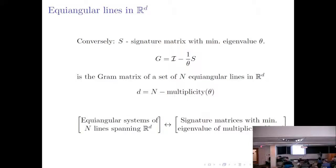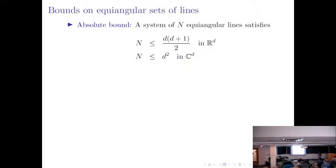So if we are trying to study systems of equiangular lines, we reduce that to the study of these matrices, and most of the results can be obtained from tools borrowed from linear algebra. One might wonder about the bounds: what is the maximum number of equiangular lines you can get in a given dimension?